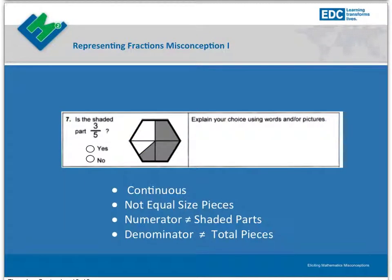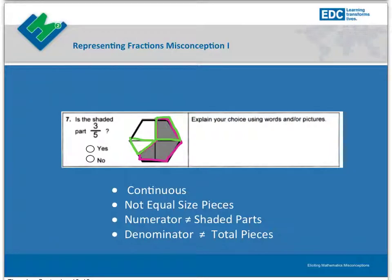We're going to take a look today at some student thinking about three different items to gain a better understanding of Misconception 1. All of the items we will explore are continuous, meaning that the pieces share common borders with each other. They are also all going to contain unequal pieces of different sizes, and the students will not be able to count the shaded-in pieces for the numerator and the total number of pieces for the denominator.